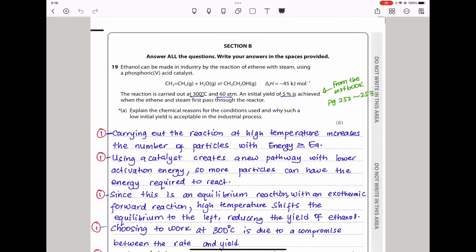Question 19 says ethanol can be made in industry by the reaction of ethane with steam using phosphoric acid catalyst. The equation shows the enthalpy change is negative 45 kilojoules per mole. The reaction is carried out at 300 degrees Celsius and 60 atmospheres. An initial yield of 5% is achieved when the ethane and steam pass through the reactor. The temperature and pressure are really high, but the yield is quite low at just 5%. We also need to consider that this reaction is reversible.